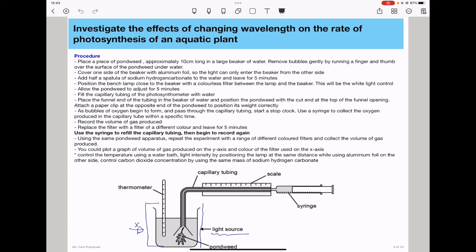So this brings us to the end of this video about changing wavelength and how it affects the rate of photosynthesis. In the next video, we're going to look at how changing temperature affects the rate of photosynthesis for the same aquatic plant. Thank you for being with us. Do not forget to subscribe. See you in the next video. Bye-bye.